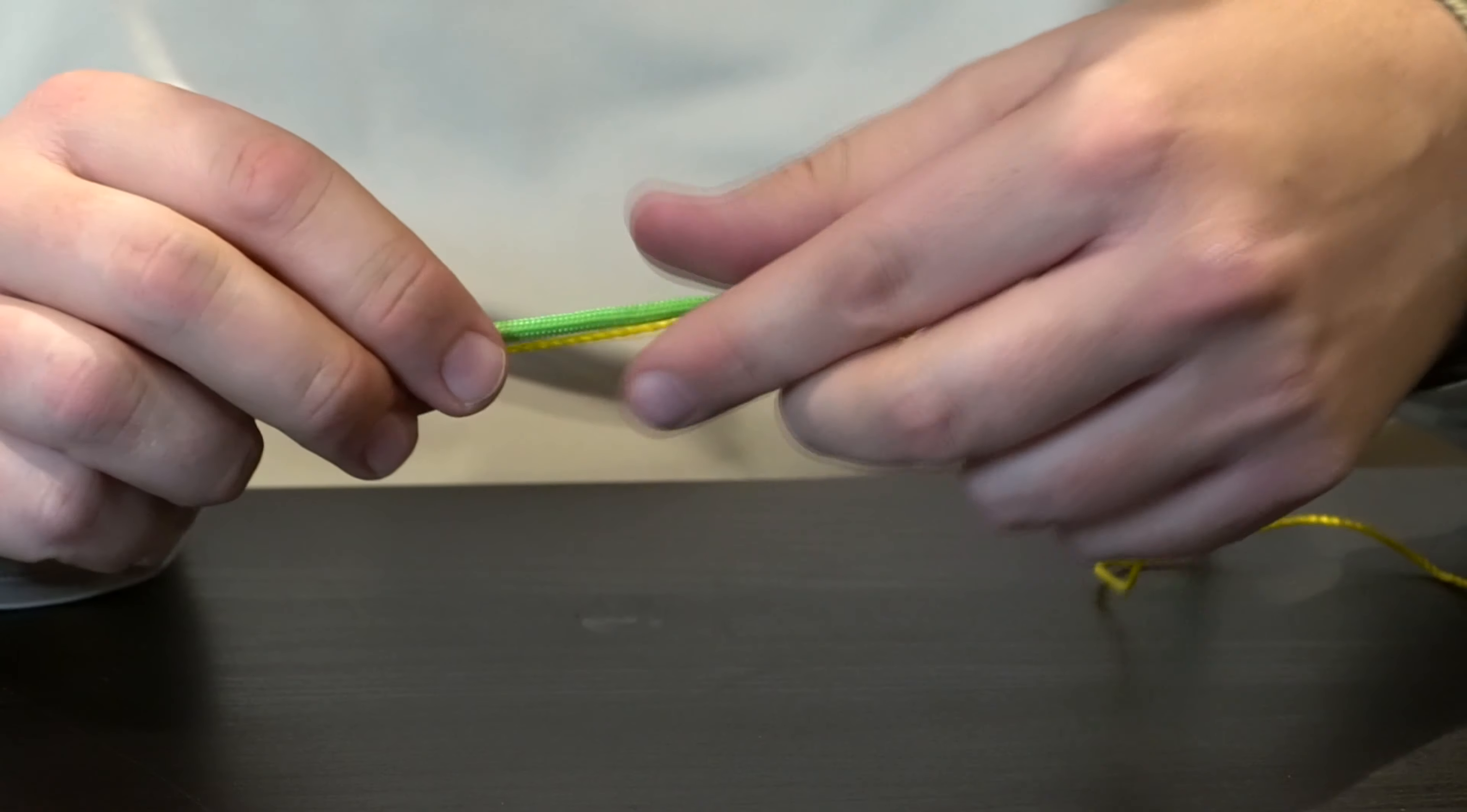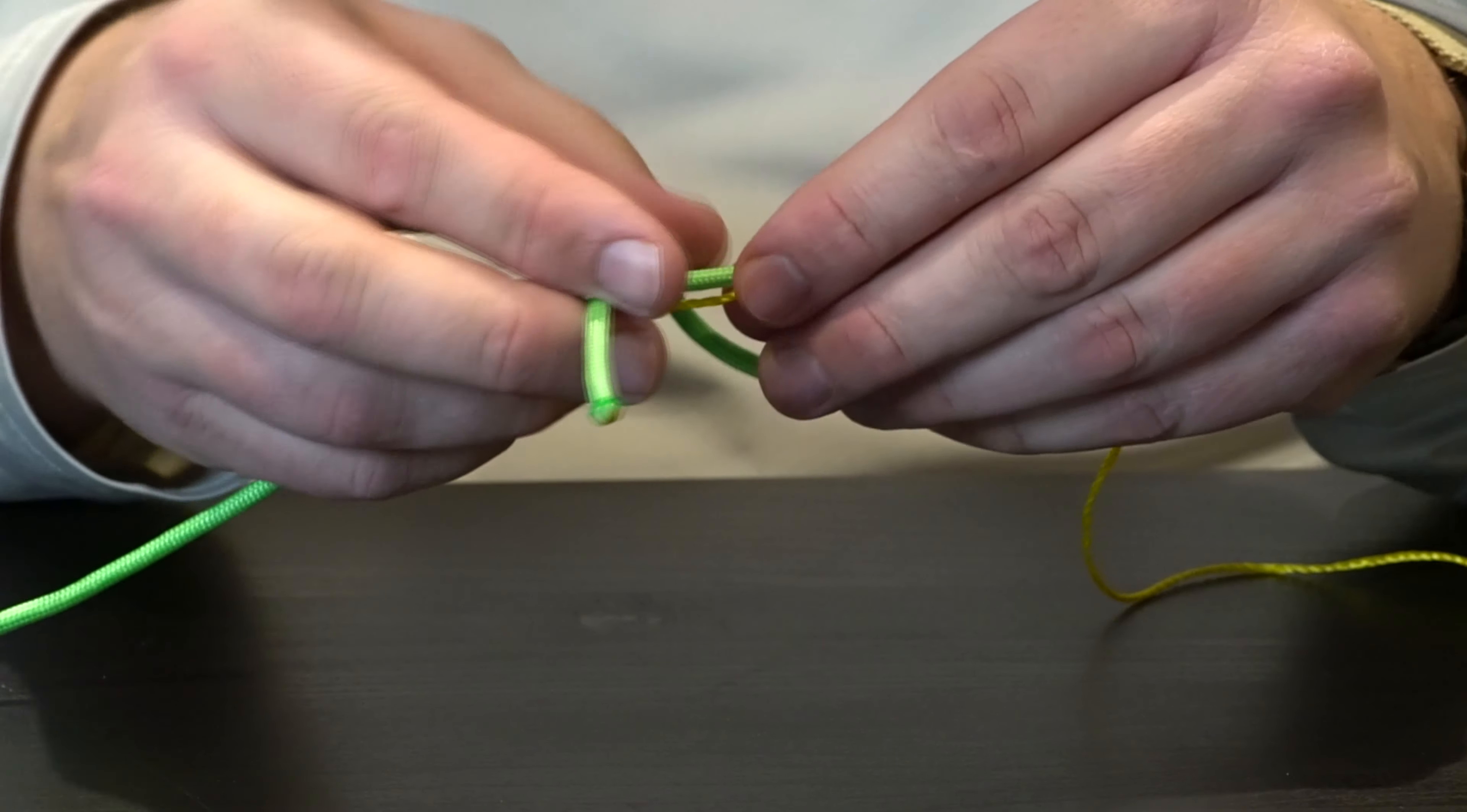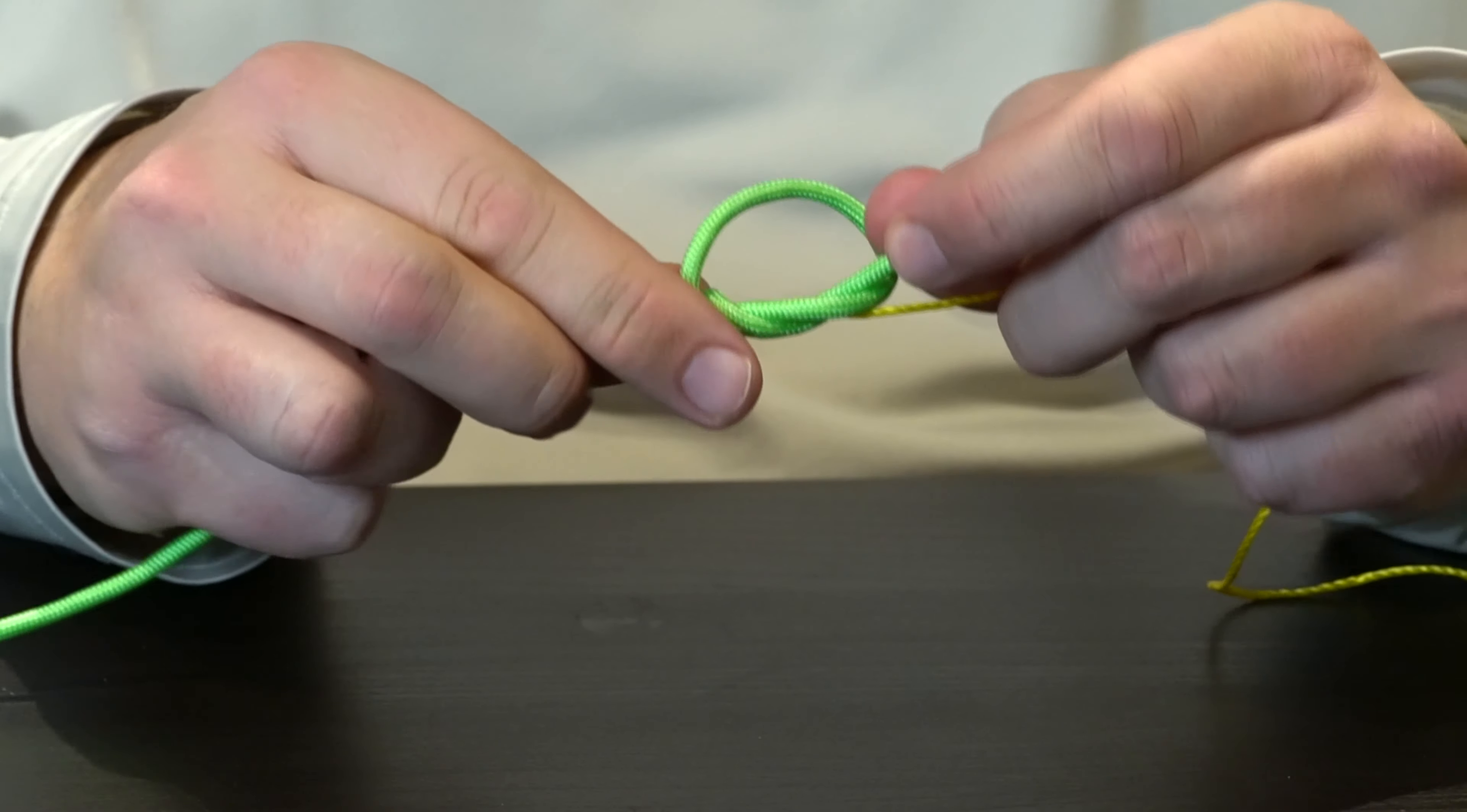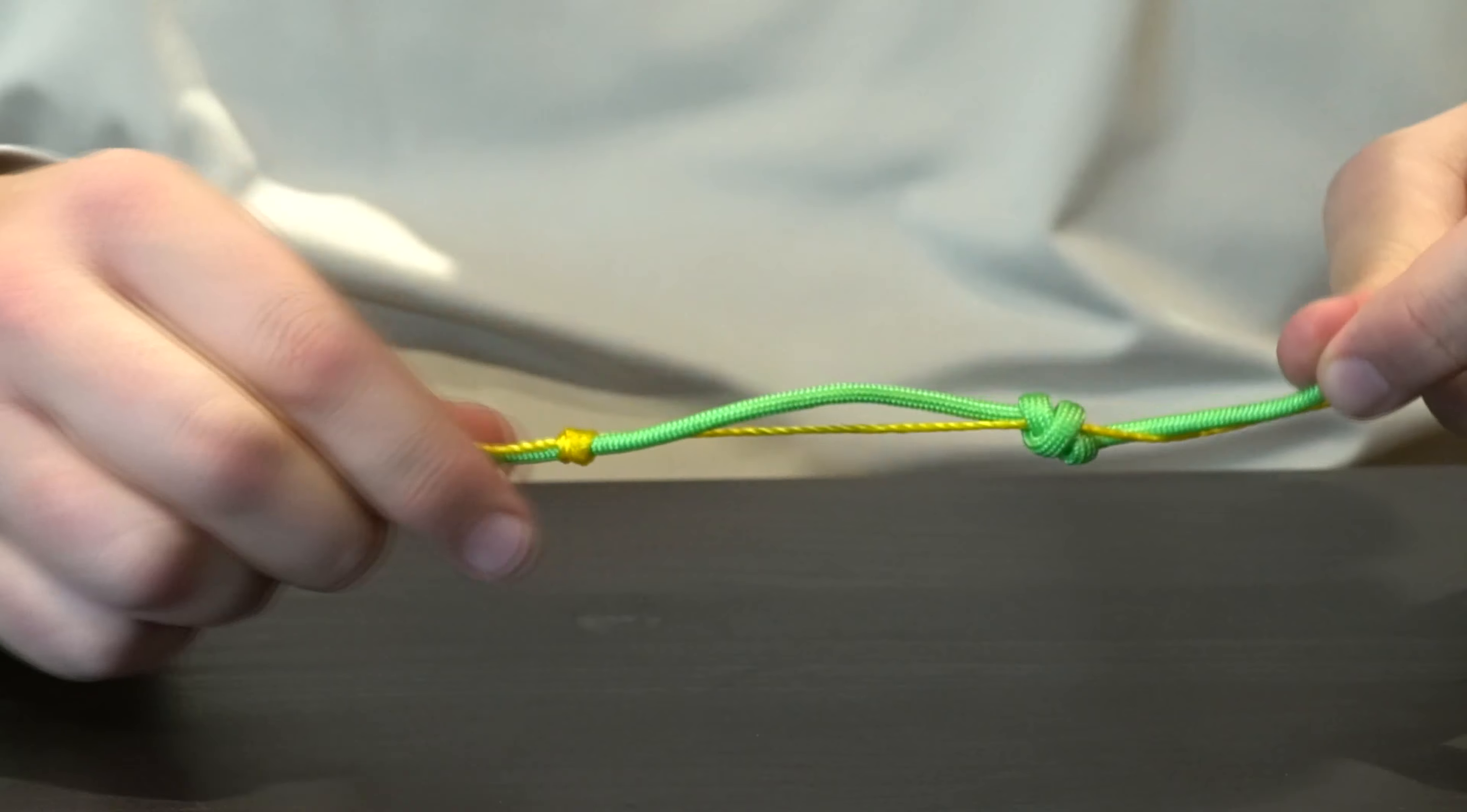From here, I'm going to take the thicker line. Because this is paracord and kind of harder, I'm only gonna do this through here two times, but you could probably do it three to four times. I'll do the same thing here and pull that tight.